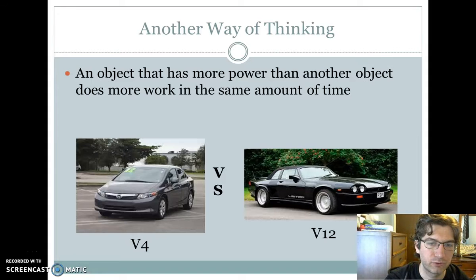So here we have two cars. We have your Honda Civic, which has a V4 engine. It can get you from point A to point B. And that's all that really matters in a car. Or you could get your Jaguar over here, which for some reason has a V12.